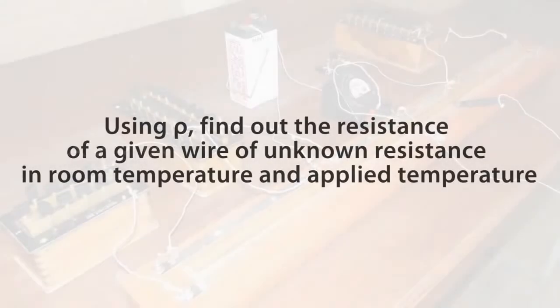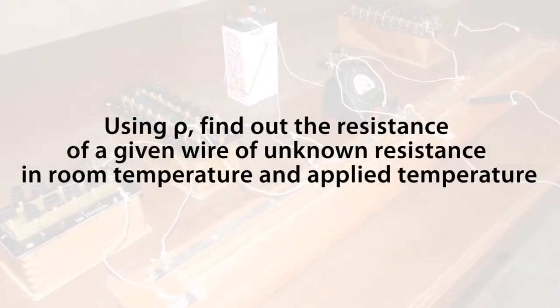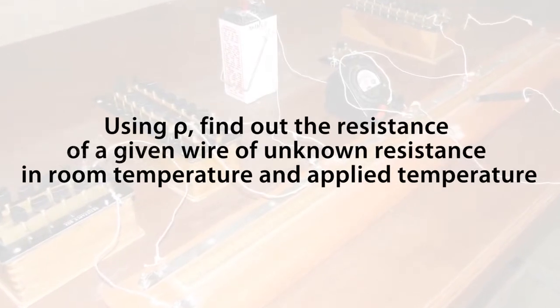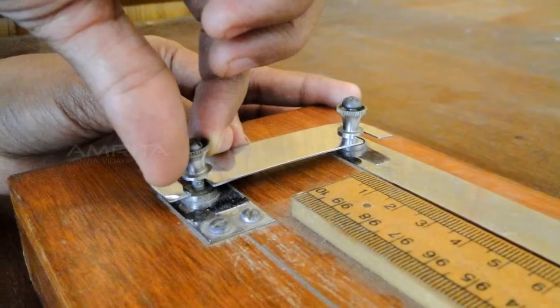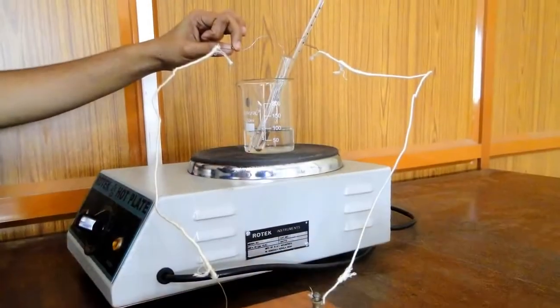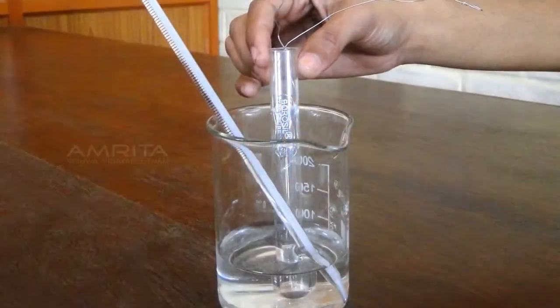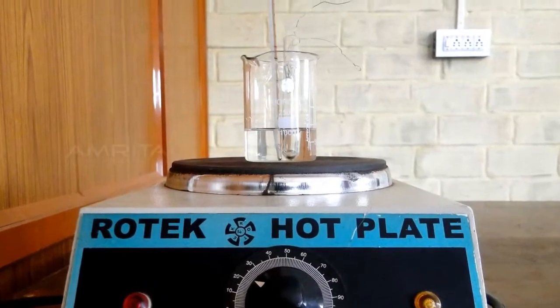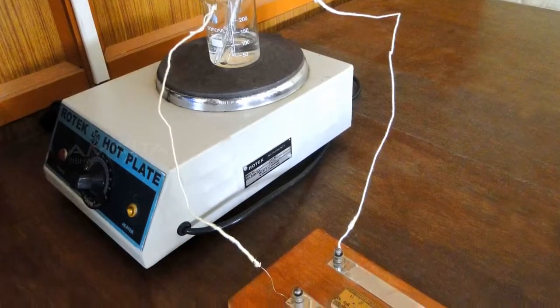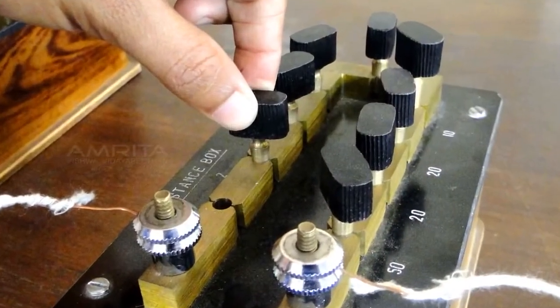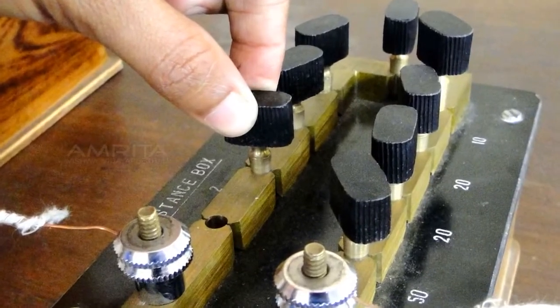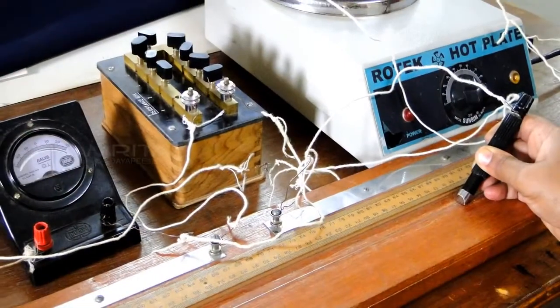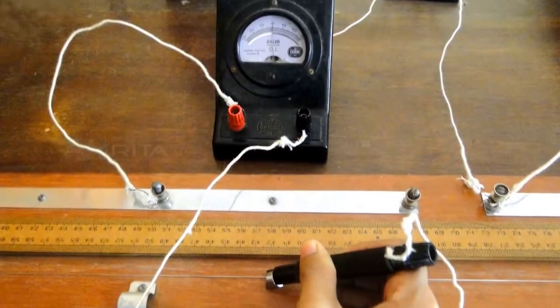Using ρ, find out the resistance of a given wire of unknown resistance in room temperature and applied temperature. Remove the copper strip and insert the unknown low resistance, that is a beaker with water, thermometer, heater, and a test tube with unknown resistance inside it in one of the outer gaps of the bridge. Set the resistance of fractional resistance box a little high, ranging from 1 to 10. Repeat the same procedure of finding the balancing lengths L1 and L2.